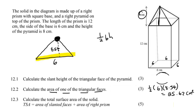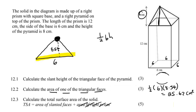Now it says: calculate the total surface area of the solid. Sometimes they suggest: total surface area = area of pyramid faces + area of the right prism. That is incorrect — and that is where they are going to catch you out in your test.